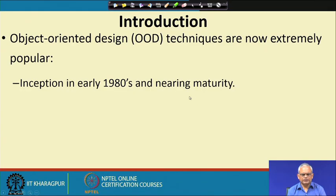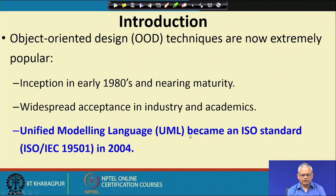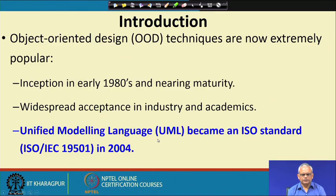The initial work in object orientation was done in the 1980s and it is now nearing maturity. There is widespread acceptance in industry and academics, and UML is the modeling language using which design is done. UML stands for Unified Modeling Language and has become an ISO standard in 2004. Therefore, object oriented design is much more standardized than procedural design.